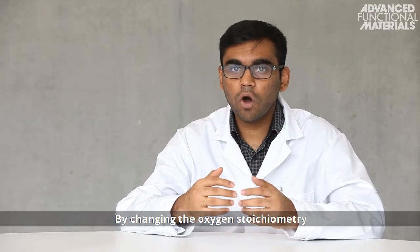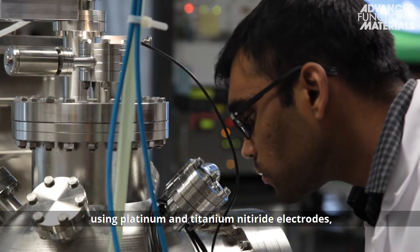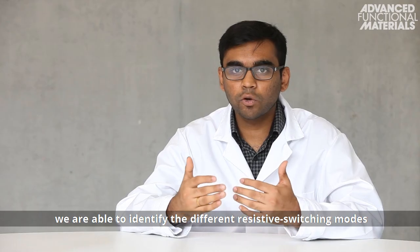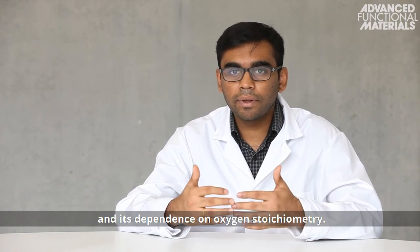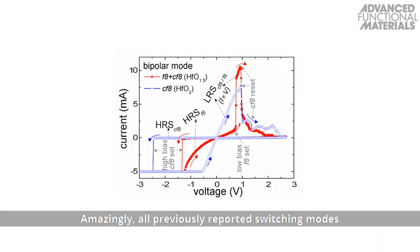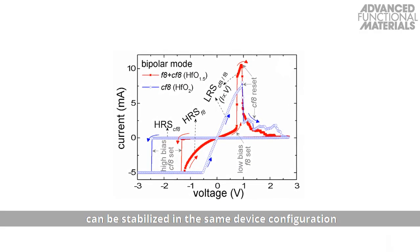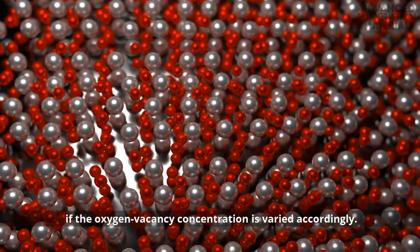By changing the oxygen stoichiometry in a hafnium oxide-based R-RAM device using a blanket annealing approach, we are able to identify the different resistive switching modes and their dependence on oxygen stoichiometry. Amazingly, all previously reported switching modes can be stabilized in the same device configuration if the oxygen vacancy concentration is varied accordingly.